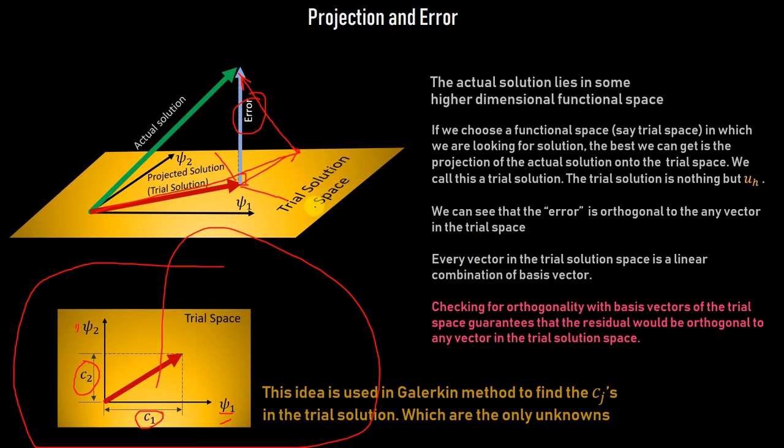This idea of projection is used in what is called Galerkin's method to find out the Cⱼ's, which are the unknown nodal values.